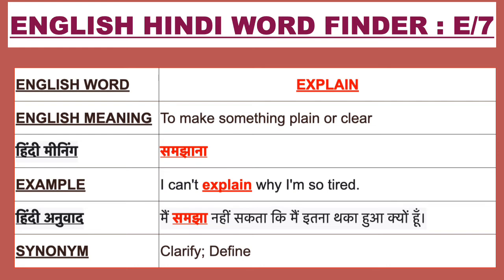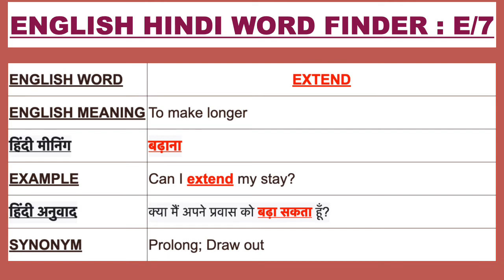Synonyms of expert are ace and master. Our next English word is 'explain'. The English meaning of explain is to make something plain or clear. Explain ka Hindi meaning hai 'samjhana'. For example: 'I can't explain why I am so tired.' Isse Hindi mein bolenge: 'Main samjha nahi sakta ki main itna thaka hua kyun hoon.' Synonyms of explain are clarify and define.